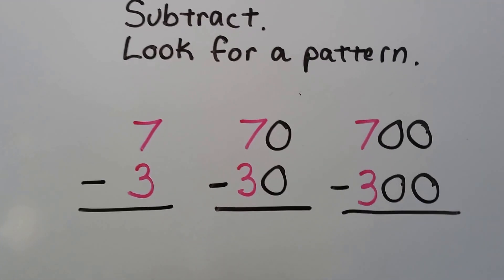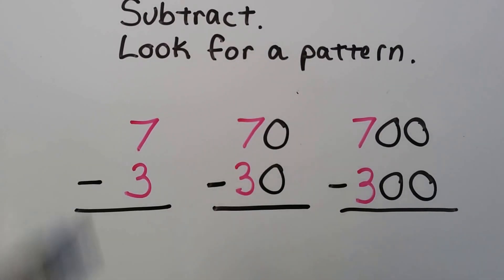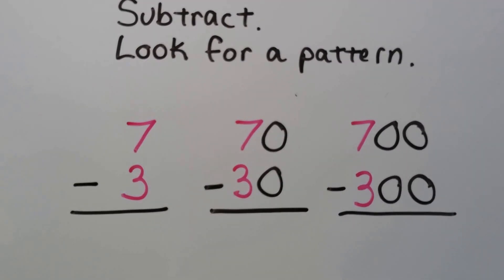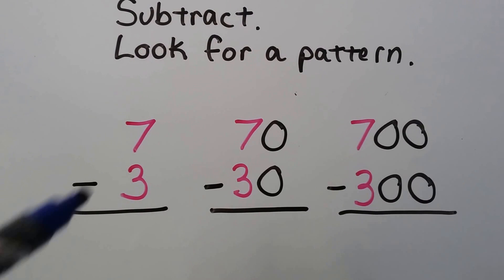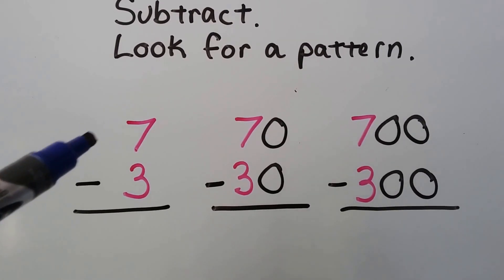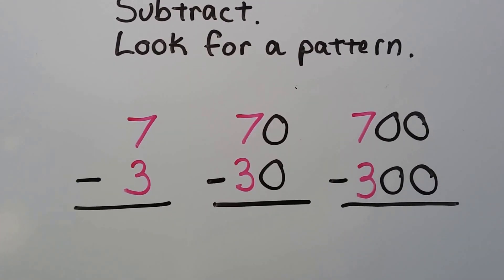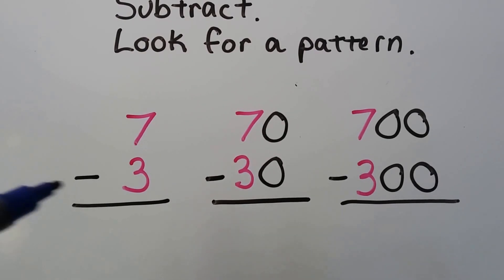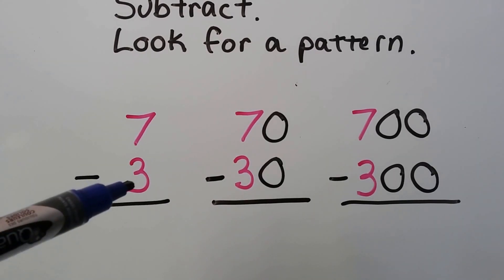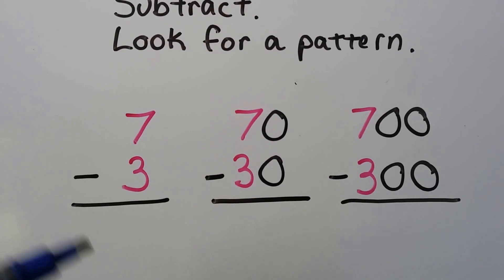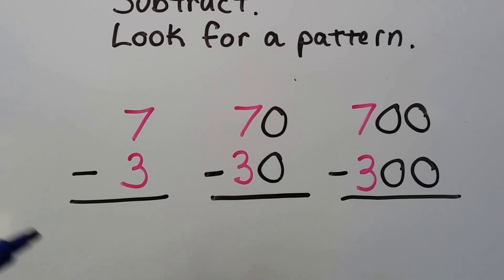Now let's subtract and look for a pattern. We'll start with seven minus three. We can start at seven and count back three — seven, six, five, four — or we can start at three and count up to seven: three, four, five, six, seven. The answer is four.